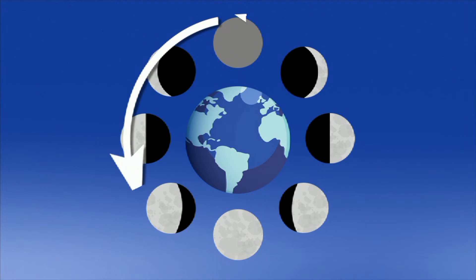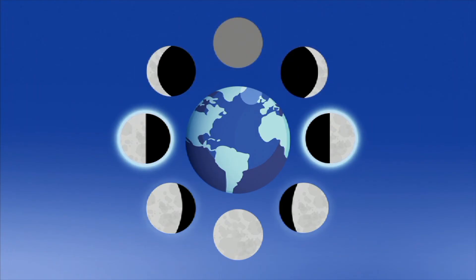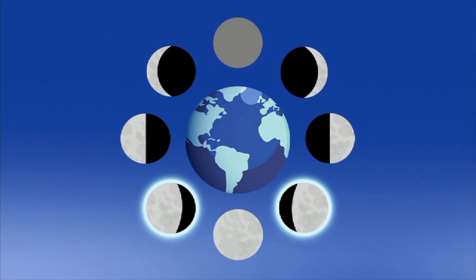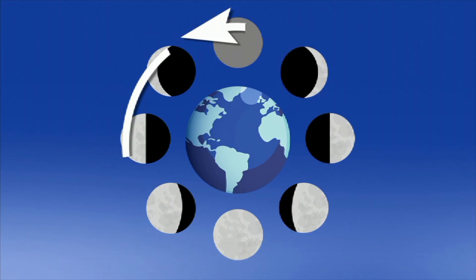To review, when describing the phases of the Moon, you only need to know two things. What shape is it? New, crescent, quarter, gibbous, or full. And whether it's getting bigger, waxing, or smaller, waning.